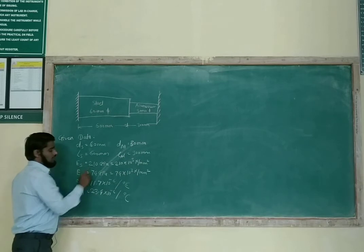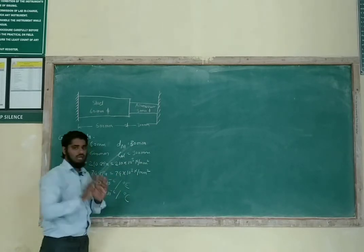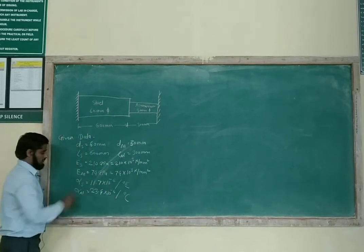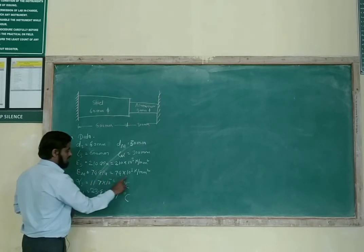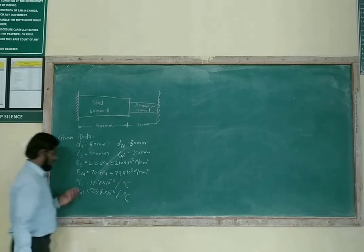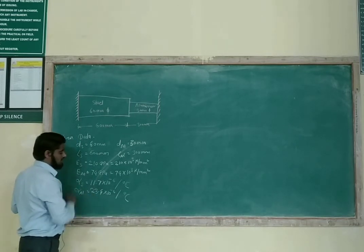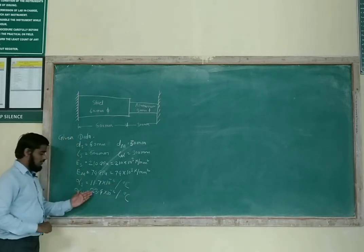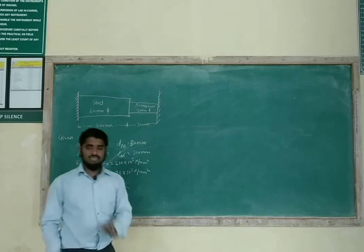E_S, the modulus of elasticity for steel, is 210 GPa — converted to MPa that is Newton per mm², just multiply by 10³. Modulus of elasticity of aluminium is 74 GPa, that is 74 × 10³ N/mm². The coefficient of thermal expansion for steel is 11.7 × 10⁻⁶ per degree centigrade, and for aluminium 23.4 × 10⁻⁶ per degree centigrade.